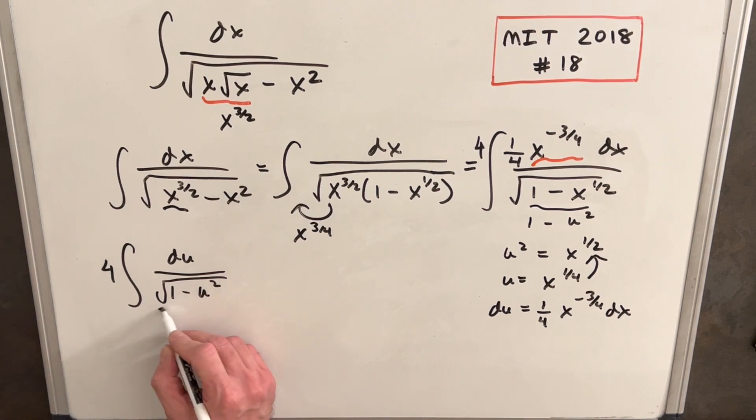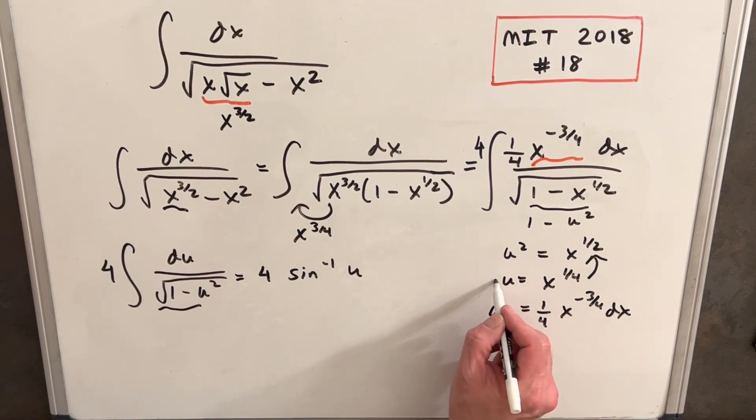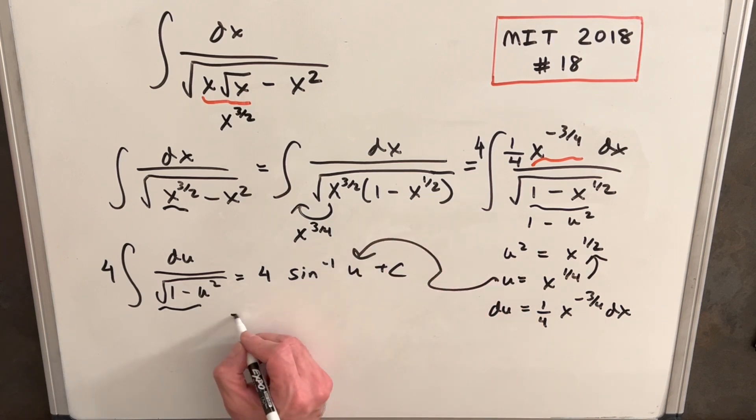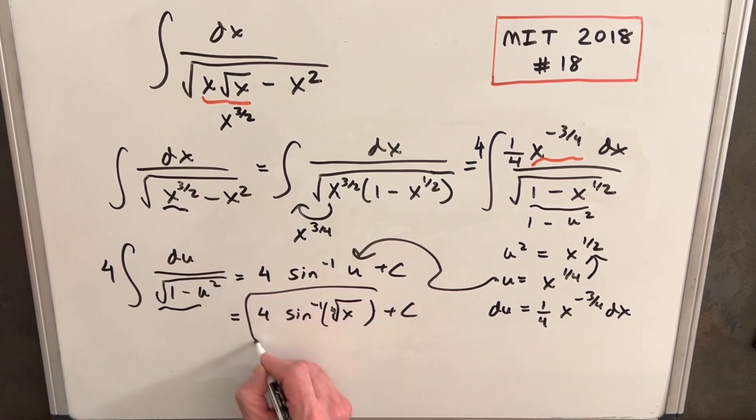So let's rewrite this. We're going to have 4 inverse sine of u. And then we'll just do our back substitution here. For our final answer, we're going to have 4 sine inverse x to the 1 fourth. We'll write it as a fourth root just because plus c and we're done.